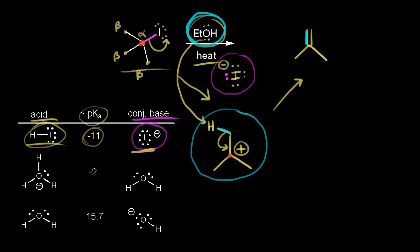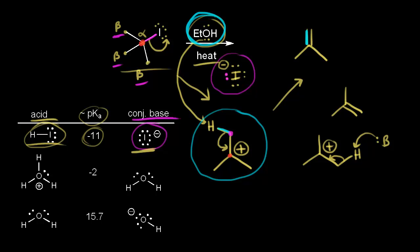We had three beta carbons. It doesn't matter which of those carbons we take a proton from because of symmetry. Whether the weak base takes a proton from one beta carbon or another, the electrons move in to form the same double bond — the same product either way.